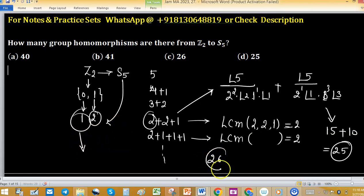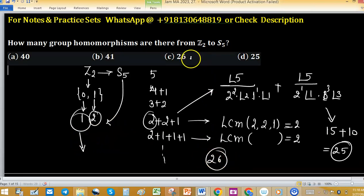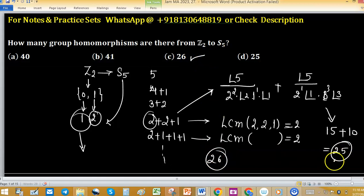So there are 26 group homomorphisms. Option C is correct: 25 are non-trivial and 1 is trivial.